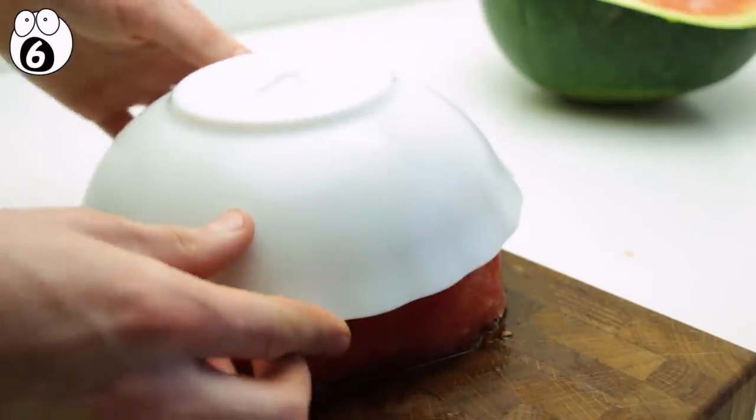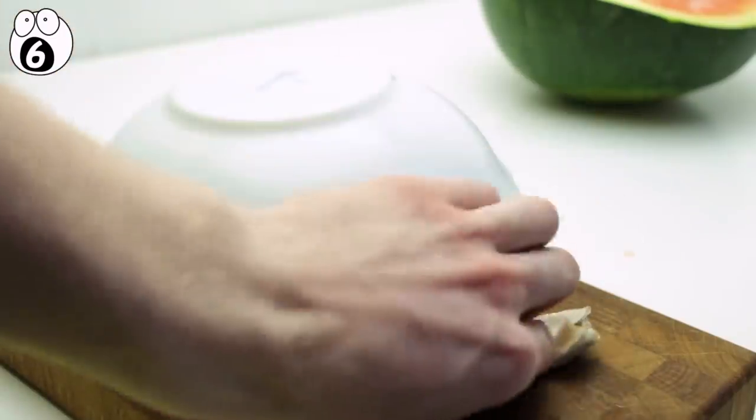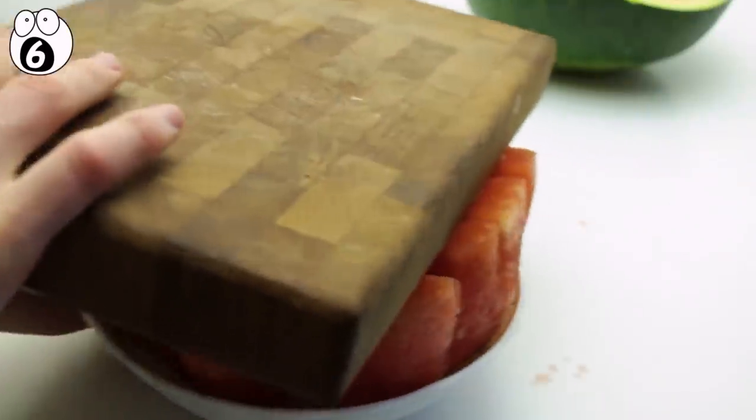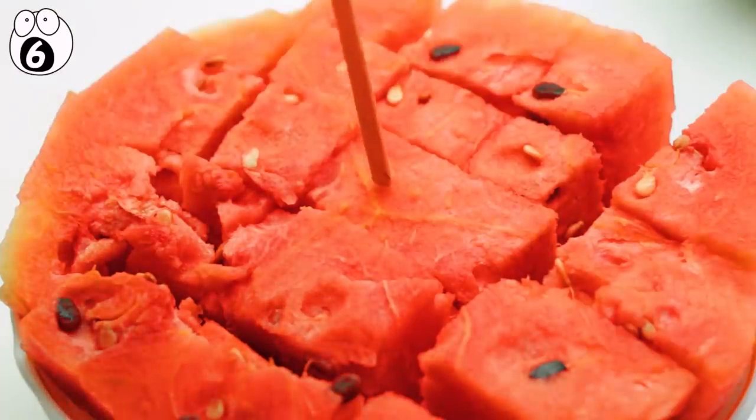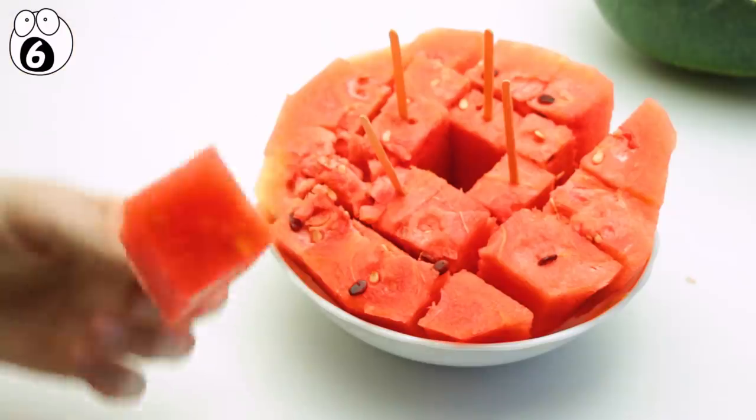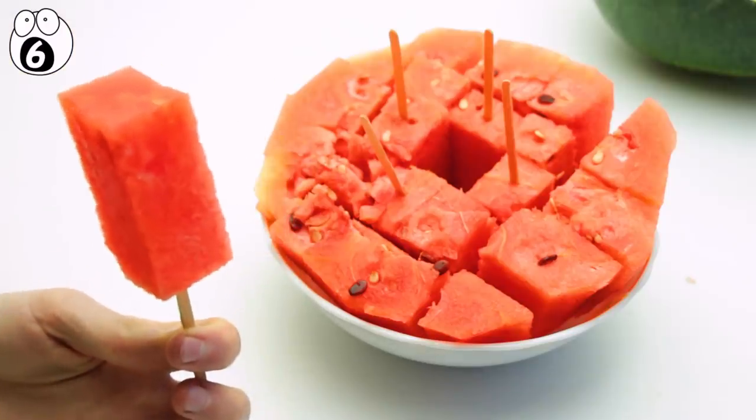Find a bowl that fits over the top of your watermelon and place it over the top. Now clean up any excess juice with a paper towel and then hold the board securely to flip it all right side up. Finally, insert some popsicle sticks into the perfectly sliced watermelon rectangles and enjoy your mess-free watermelon treat.